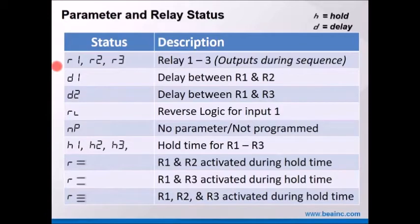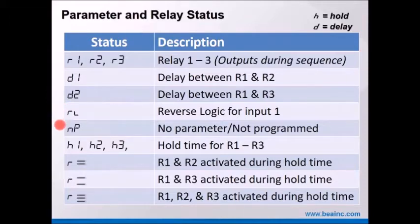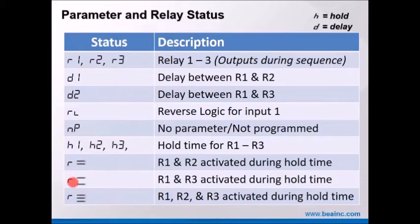Parameter and relay status: relay one through three are shown on the BR3 LCD screen as R1, R2, R3. The delay between relay one and relay two is D1; between relay one and relay three is D2. Reverse logic for input one is shown as lowercase RL. Hold times for relays one through three are H1, H2, and H3. The display also shows which relays are activated during their respective hold times.